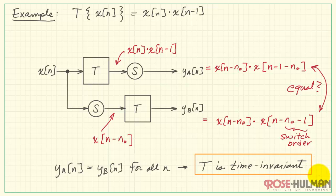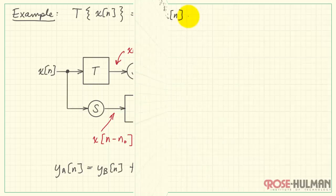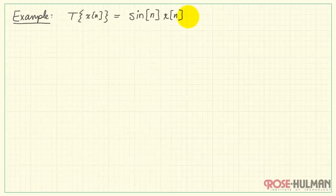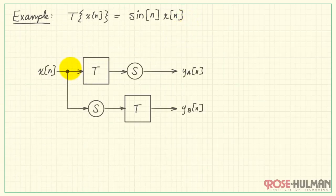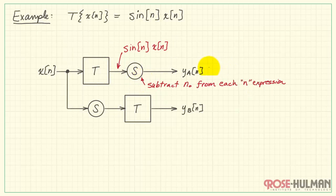Let's try this out on a second example. Here the system operator is operating on X by multiplying it by sine of N. This gives us sine of N times X of N. Now we need to subtract N-naught from each N expression, as I'm doing here.